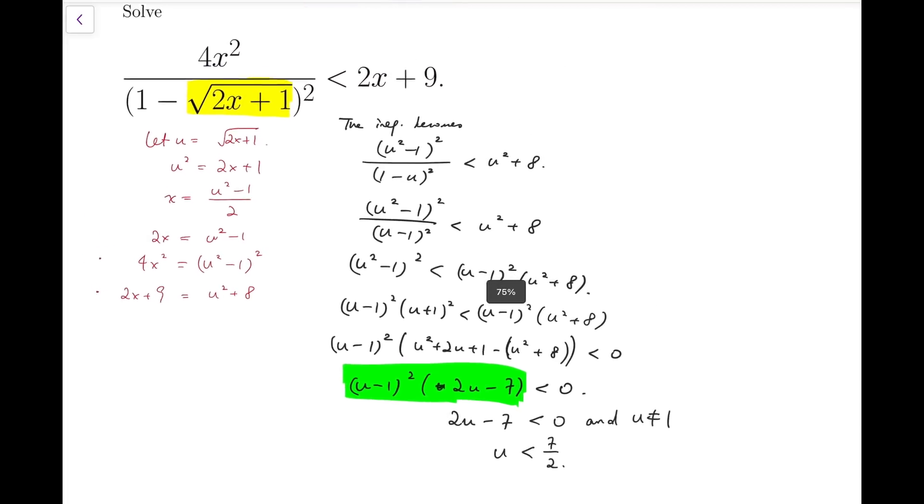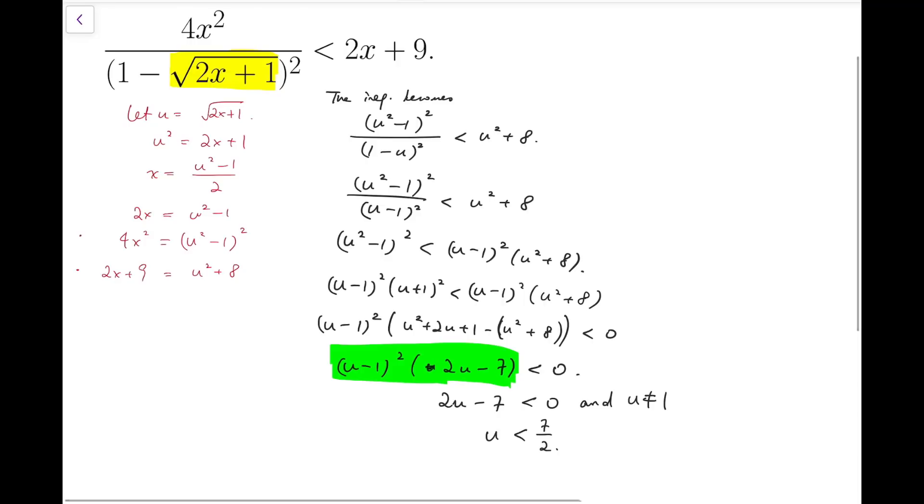Now, remember that we are actually asked to solve for x. You see, our original variable is actually x. So we go back to square root of 2x plus 1 is less than 7 over 2. Of course, because we are dealing with a radical sign, so this whole expression must be non-negative as well. This is a natural constraint.